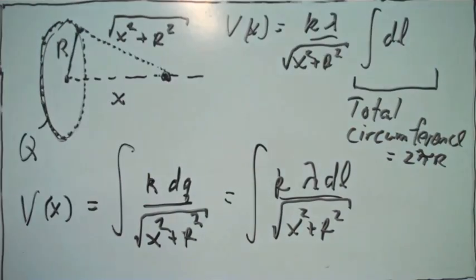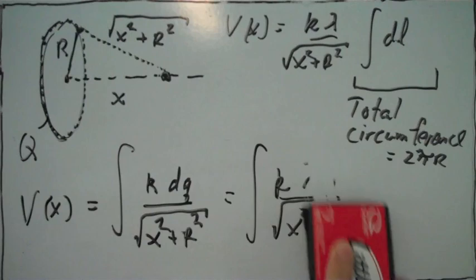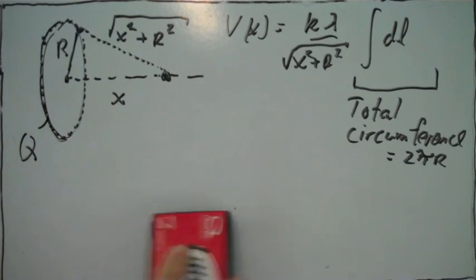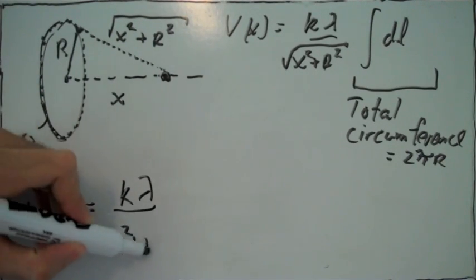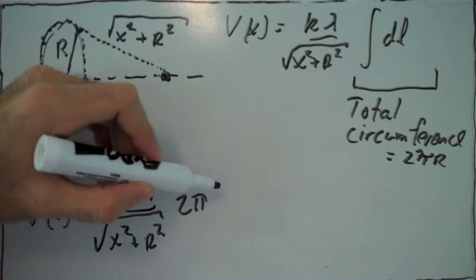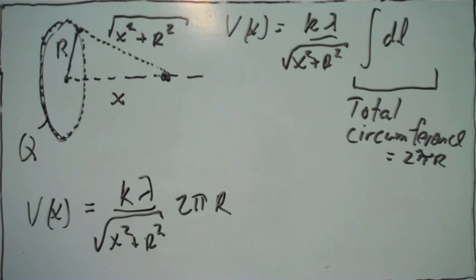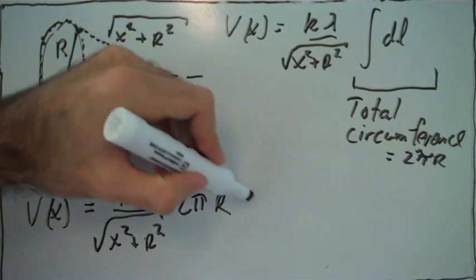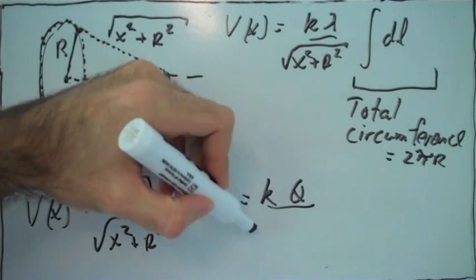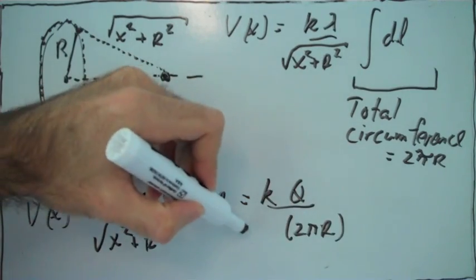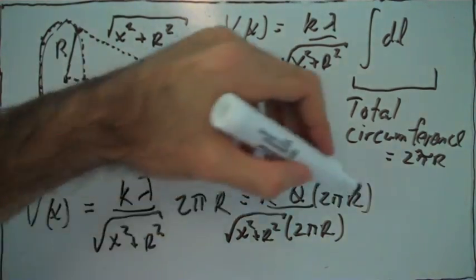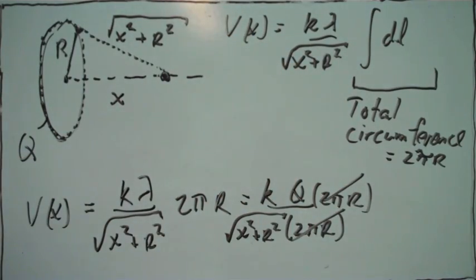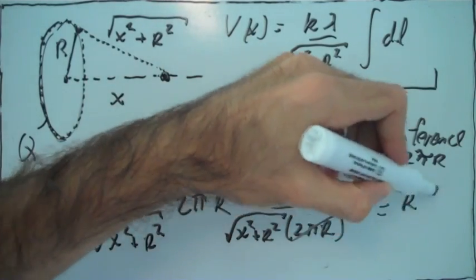Now we can substitute what lambda is. Lambda is just the total charge divided by the circumference, the charge density of the ring. So we plug in here into lambda, we plug in q divided by 2 pi r, we get this. The 2 pi r's are going to cancel out, and then the total potential at the point located at distance x from the center is given by this.